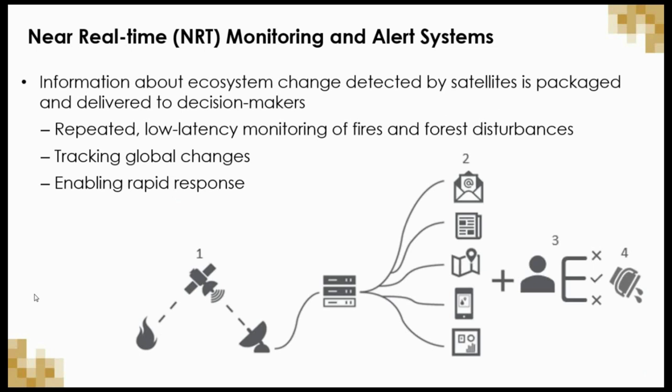What do we mean by near real-time monitoring and alert systems? These are systems where information about ecosystem change detected by satellites is packaged and delivered to decision makers. The systems are based on repeated low temporal latency monitoring of fires or forest disturbances, and they facilitate the tracking of global change and enable rapid response.